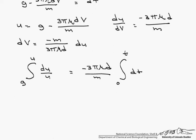So when you do integrate this, you come out with the ln of u minus the ln of g equals minus 3 pi mu d over m times t.